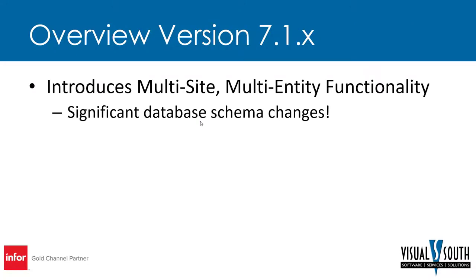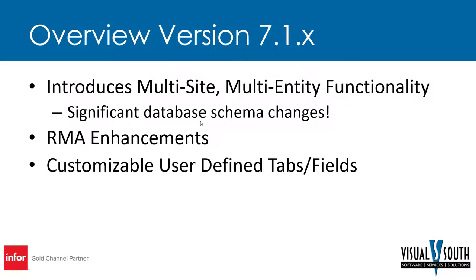Version 7.1 is where multi-site multi-entity functionality came out. This is the most significant database schema change going from 7.0 to anything newer — entity and site tables are added and attach to almost every table in the database. If you have reports, macros, or other customizations grabbing or updating data in certain tables, those tables or that data may no longer exist. RMA enhancements came with customizable user-defined tabs and fields — you can add your own tabs to customer order entry with dropdown lists, Boolean fields, and date fields.